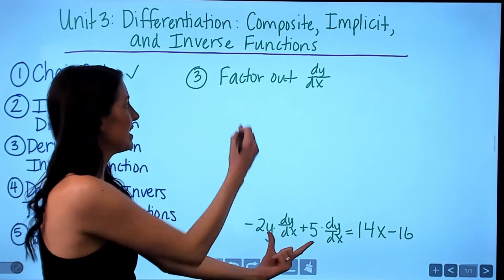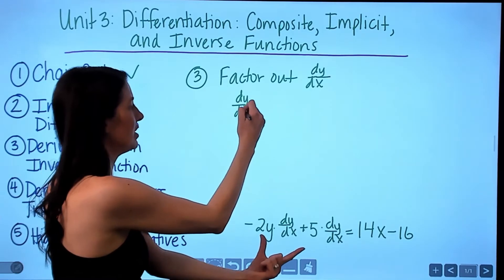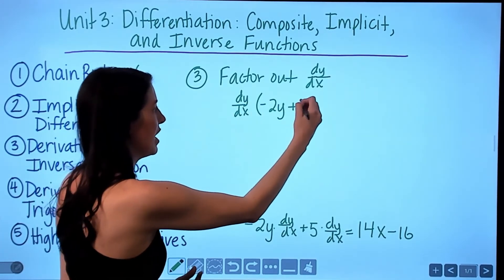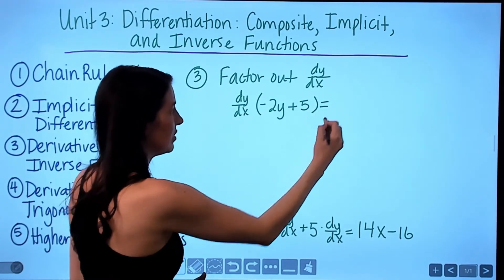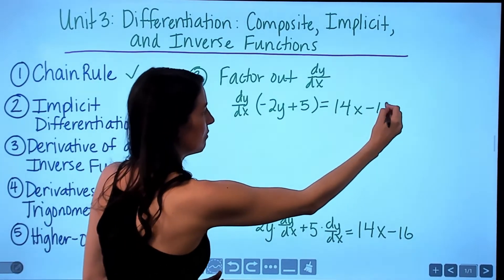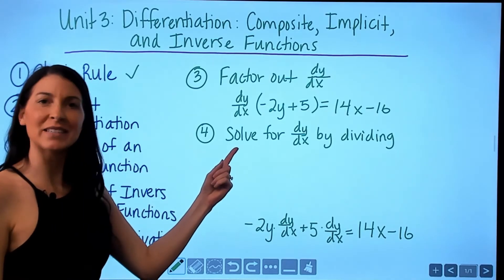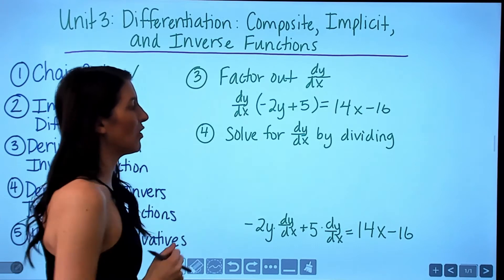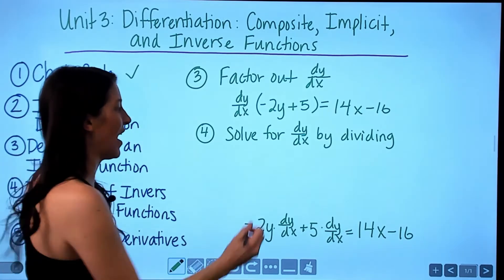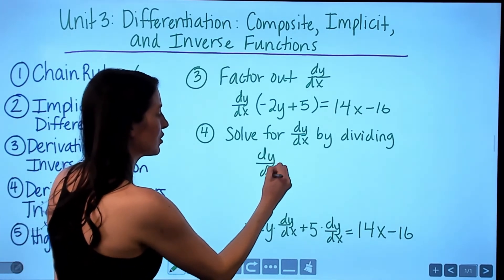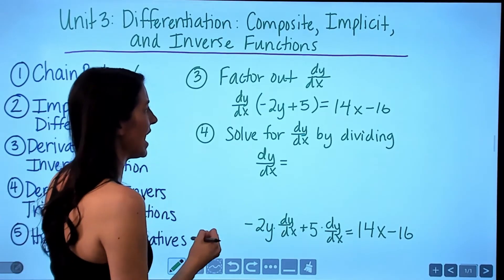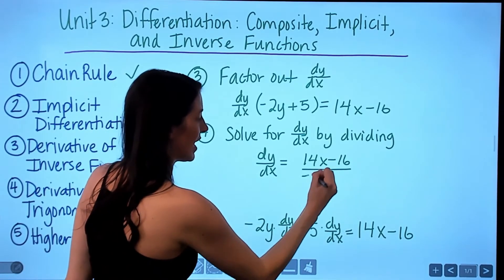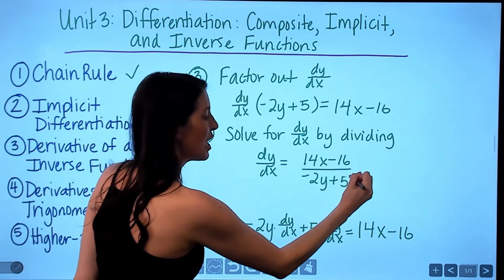After collecting terms, we have negative 2y times dy/dx plus 5 times dy/dx equals 14x minus 16. In step 3, factor out the common factor of dy/dx: dy/dx times (negative 2y plus 5) equals 14x minus 16. In the final step, solve for dy/dx by dividing both sides by the quantity (negative 2y plus 5), giving dy/dx equals (14x minus 16) divided by (negative 2y plus 5).